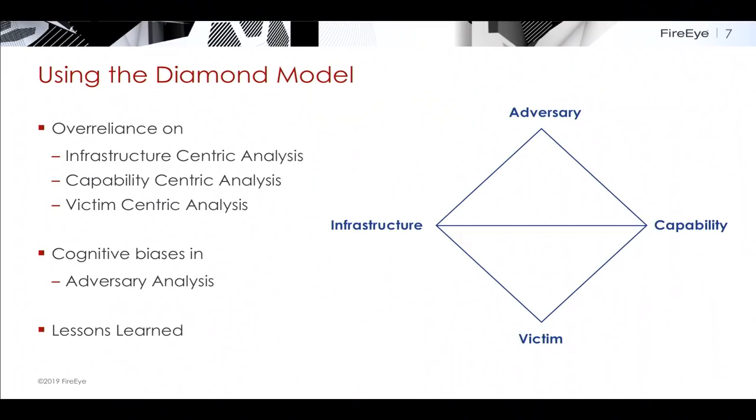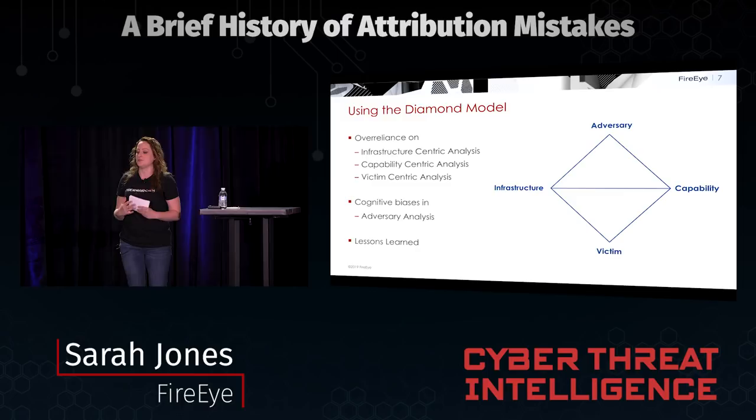I do have a few examples — just three — of times that we've gotten it wrong. But I think you'll agree they're at least worth talking about. For this talk, I'm going to be using the Diamond Model, which is a useful framework for categorizing the data we collect when researching attribution. When examining the root causes of attribution mistakes, a lot of them can be traced to an over-reliance on three parts of the Diamond Model: infrastructure-centric, capability-centric, or victim-centric analysis — and I think cognitive biases from this come at a deficit to adversary analysis.